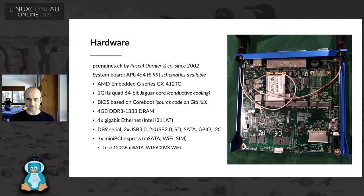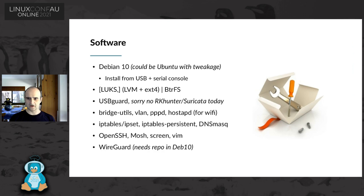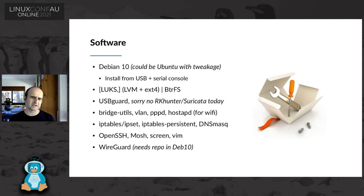That is the inside of my router. I actually have two - its sibling is right here. It's a tiny little box. For the nerds here, the specs are right there. It's a tiny little single board computer designed by Pascal Dernier in Switzerland. It's a four-core AMD which is lovely. It has passive conductive cooling - it doesn't make any noise at all. I've now added Wi-Fi to it since a couple of weeks ago.